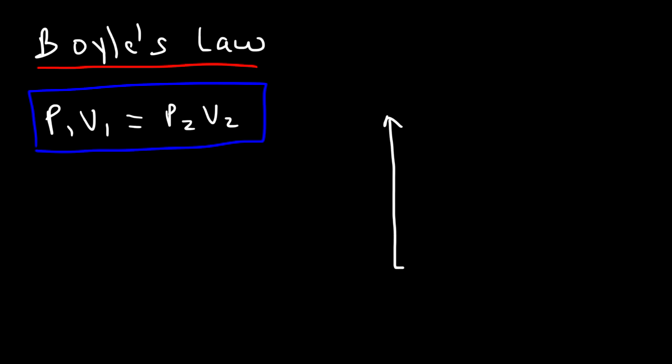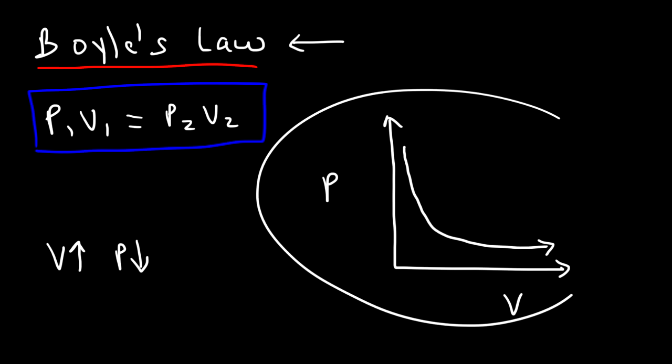Now you need to know the shape of the graph that is associated with Boyle's Law. So let's say if we plot pressure on the y-axis and volume on the x-axis. We know that as the volume increases, the pressure should decrease. Now do you think the graph is going to look like this? It's not going to be a straight line. Rather, it's going to be a curved line. As the volume increases, the pressure will decrease like this. So that's the correct shape for this type of problem, or this type of law. You might see this in a multiple choice practice test. You might be given maybe four or five graphs and need to know which one is associated with Boyle's Law. So make sure you know the shape of this graph.